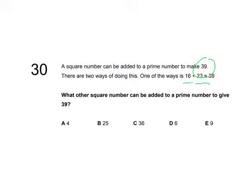So we're trying to make 39. Well, the only square numbers that we have left are 1, 4, 9, 25, and 36. So it has to be one of those square numbers.